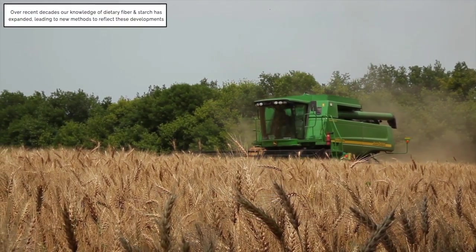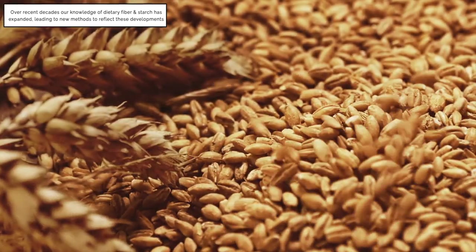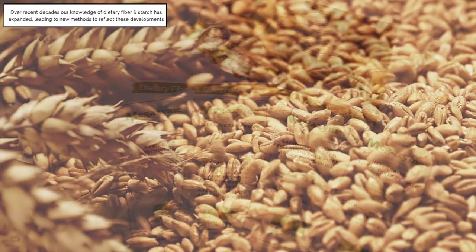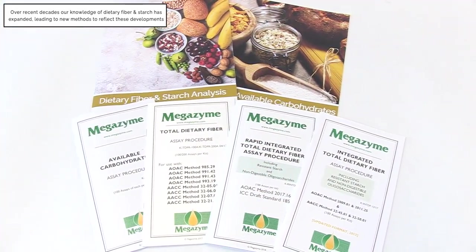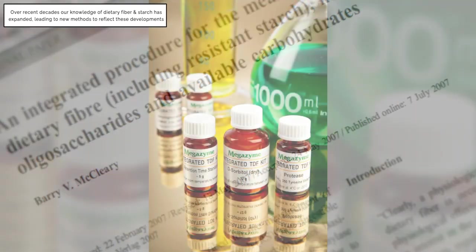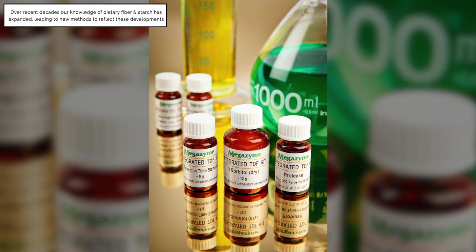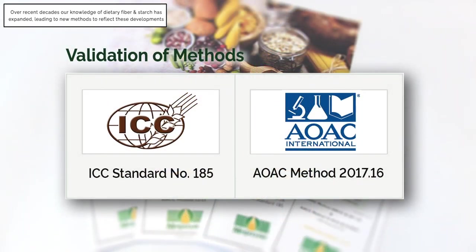Over recent decades, our knowledge of dietary fiber and starch has expanded. This has led to a new physiological-based definition of dietary fiber, and a new methodology has been developed, leading to AOAC method 2017.16 and ICC method 185 for total dietary fiber.